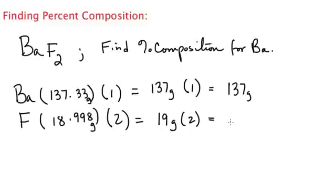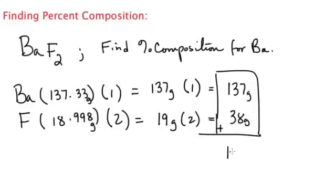When we calculate that, we get 137 grams for barium and 38 grams for fluorine. Adding these together gives us 175 grams total mass.